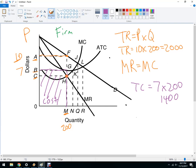So profit, which we're going to use pi for, is going to be $2,000, so it's total revenue minus total cost. So it's $2,000 minus $1,400, so it's $600, when this is a single price monopolist.